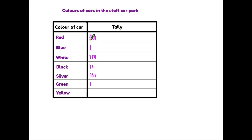We get to a point where the next car is red again. If we are in a situation where we have one, two, three, four lines — in other words we have seen four red cars so far — on the fifth one we do not put another line down the side. Instead, the fifth one is a line across. This gives us a little diagram that looks a bit like a gate, and it counts for five.